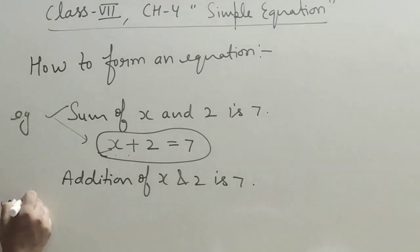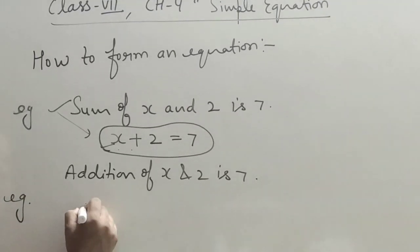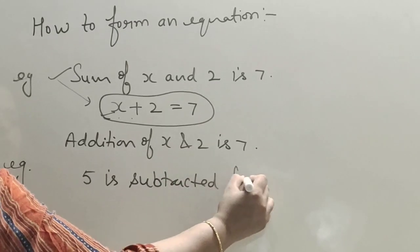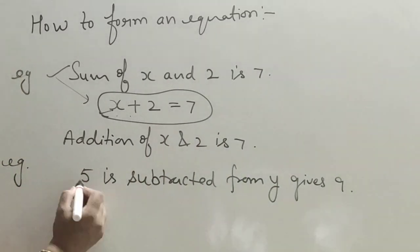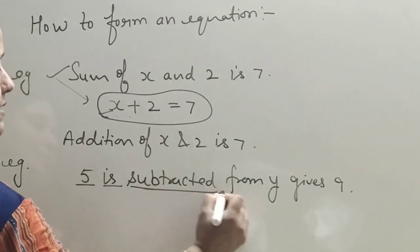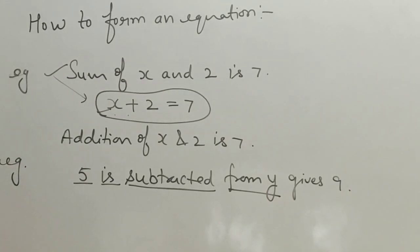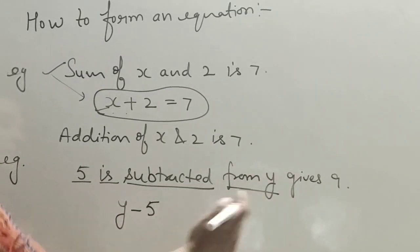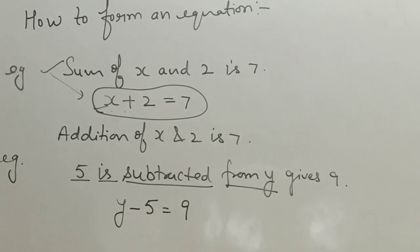The second example is a subtraction type: '5 is subtracted from y gives 9.' This means y minus 5 equals 9. We can also say '5 is taken away from y gives 9.' Subtracted and taken away have the same meaning — both form the same equation.